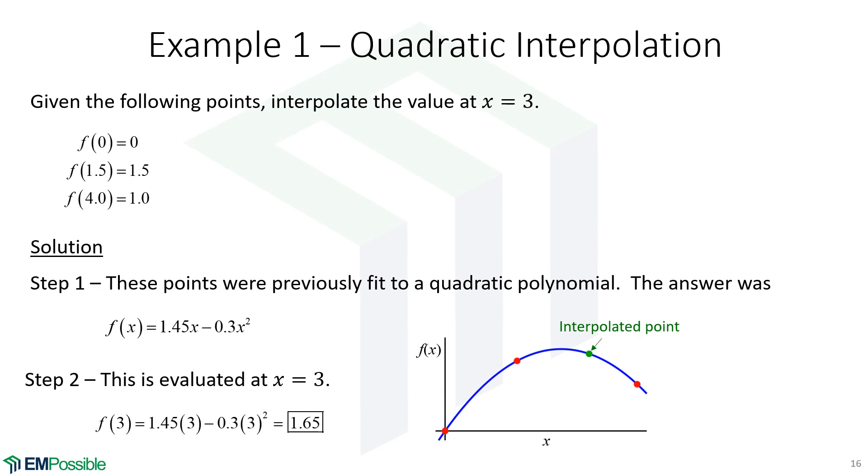So when we do that, we evaluate X equals 3, we get a value of 1.65. And so if we were to plot that, we come over to X equals 3, function value of 1.65, that falls exactly on our polynomial, which we hope that it would. And so we have interpolated a point.